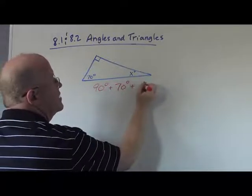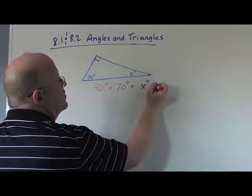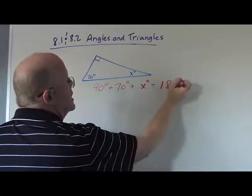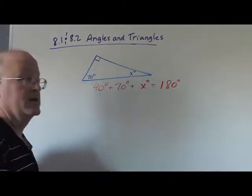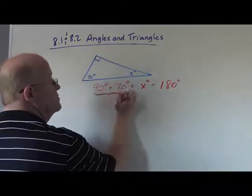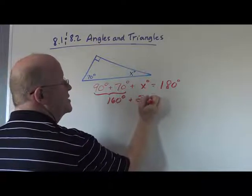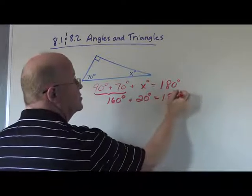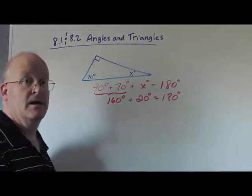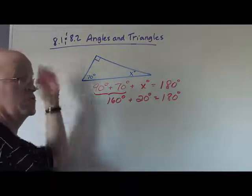When I add this unknown angle x on, those three will always add up to 180 degrees. So if these first two combined become 160 degrees, then x must be 20 degrees to add up to 180 degrees.